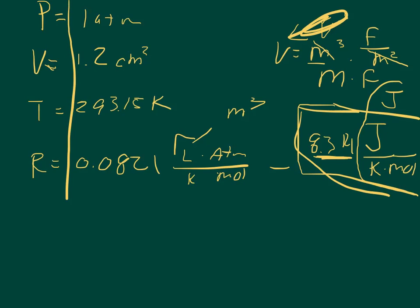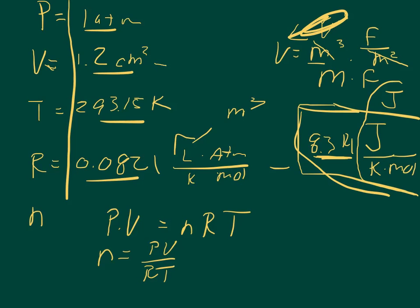We have enough to figure out what N is, the number of moles. The question wants the number of atoms or the number of molecules. So what we'll do is we'll set up P times V equals NRT, and then we'll solve for N, so N equals PV over RT, and then we can plug in our values for P and V and T and R.